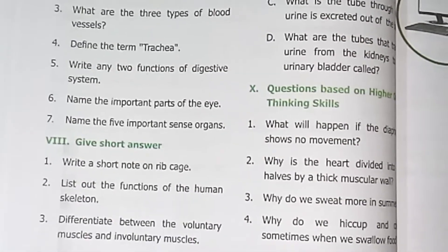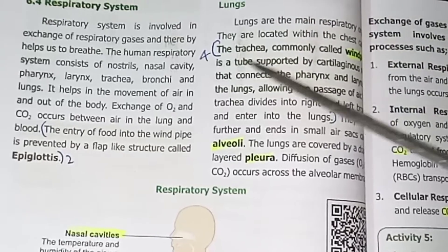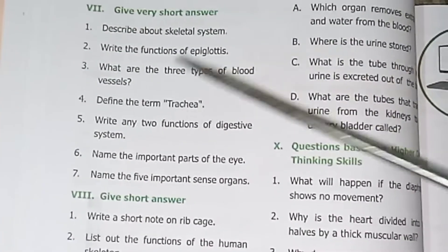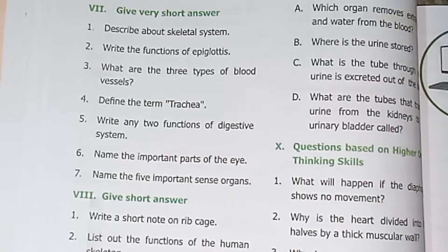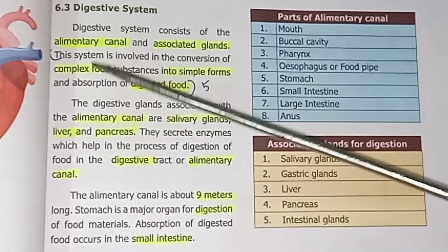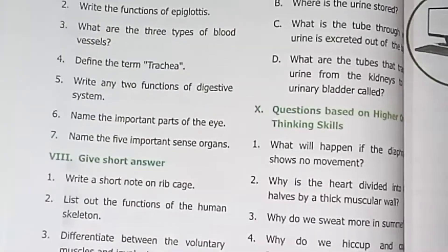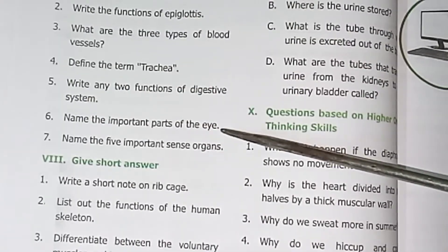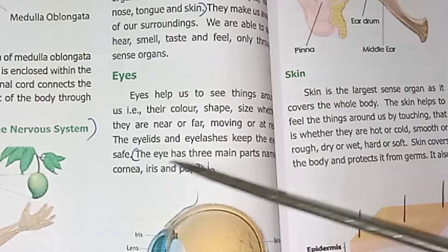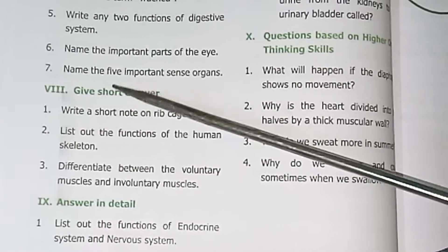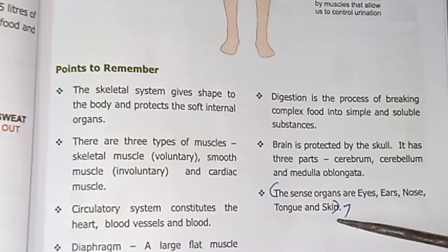Fifth: Write any two functions of the digestive system — page number 73, this system is involved in digestion of food. Sixth: Name the important parts of your eye — page number 78, the eye has a pupil. Seventh: Name the five important sense organs — page number 81, the sense organs include tongue and skin.